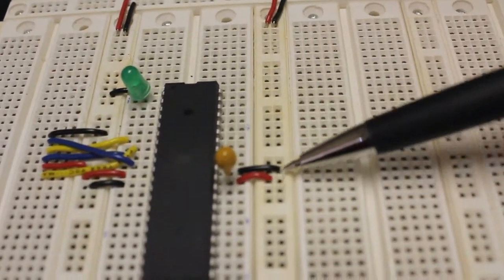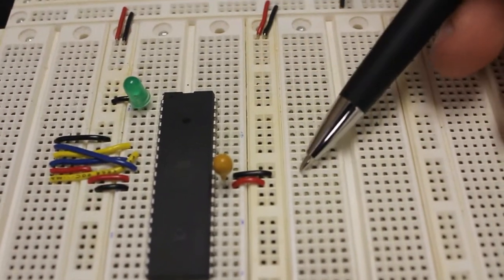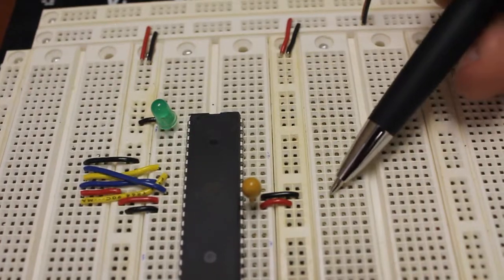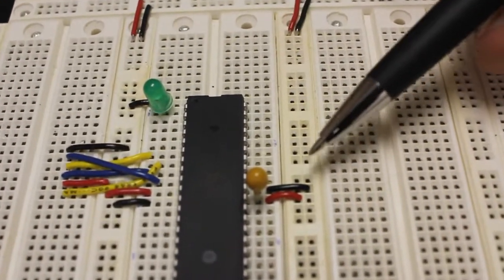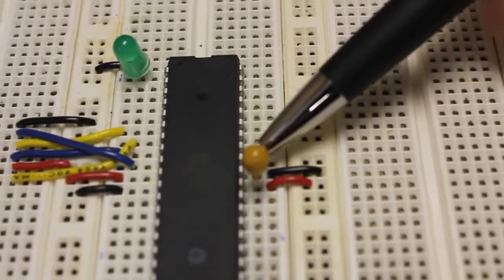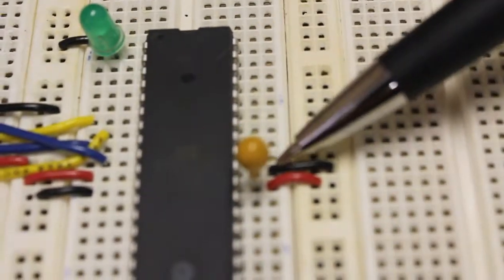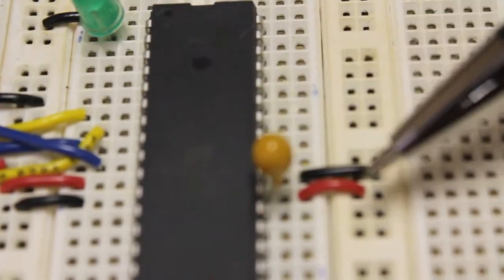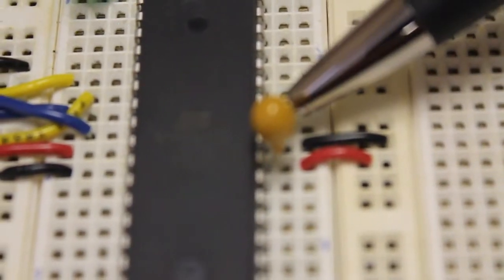Now again I have to use my knowledge about breadboards and I know that all of the connections along a row are internally wired together and this is how the black is connected to the pin of the chip. Well using the same logic I know that my capacitor is also connected to the black and the pin of the chip.